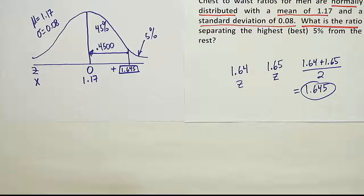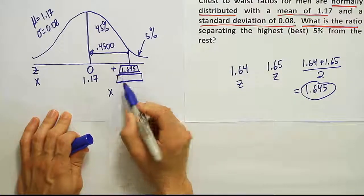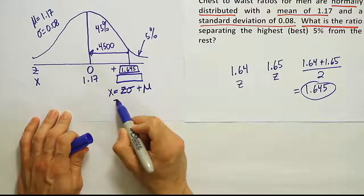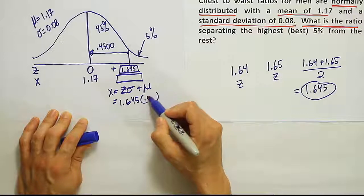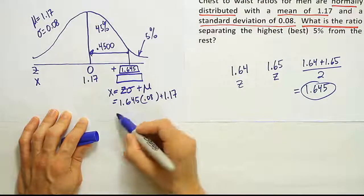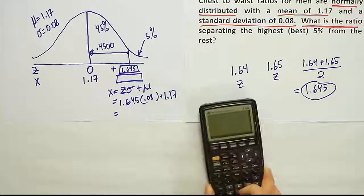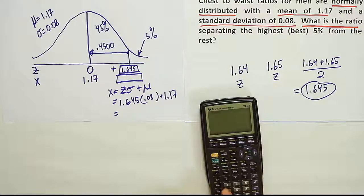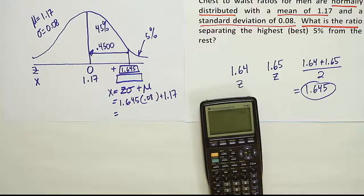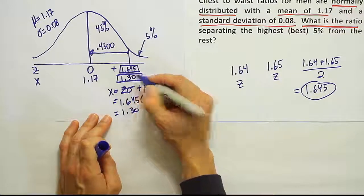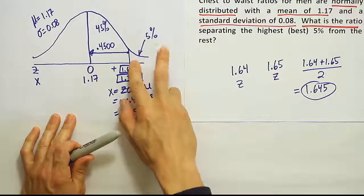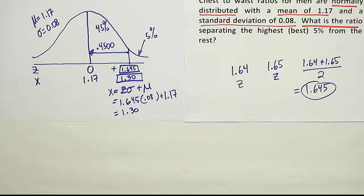That's the z-score for that position there. Now once we have that z-score, the next step is just to plug that into our formula. Remember our formula for this location here to get the x value is going to be x equals z sigma plus the mean. So our z-score is 1.645 times the standard deviation of 0.08 added to the mean of 1.17. This will give us our cut-off score for the most desirable chest-to-waist ratios. So 1.645 times 0.08 plus 1.17. When we do that, we end up with 1.30 rounded off. So 1.30 then is the cut-off score for the chest-to-waist ratio that separates the top 5% from the bottom 95% of men. So anything over 1.3 is obviously going to put you in a very desirable scenario.